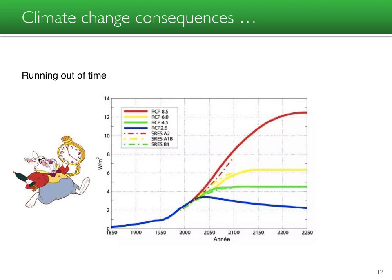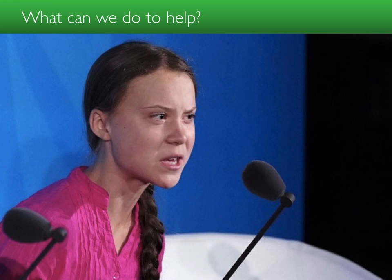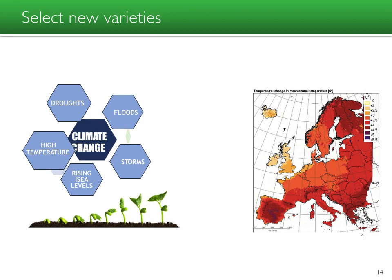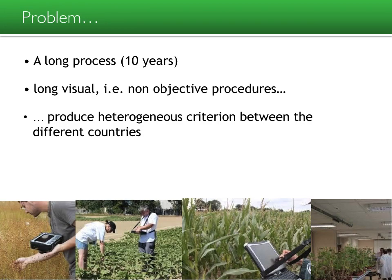Why is this? Facing climate change, we are running as humanity out of time to prepare for the consequences of climate evolution. One of the things we can do — not to stop global warming but to prepare for its consequences — is to select new varieties of plants capable of producing food while facing droughts, floods, high temperatures, rising sea levels, and storms. The problem is it's a long process: 10 years, based on non-objective visual procedures with heterogeneous criteria between countries.